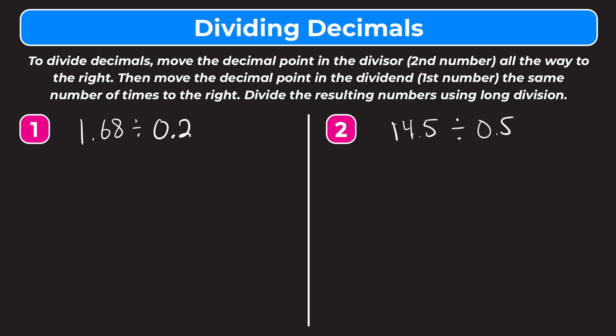So let's try that with number one. We have one and sixty-eight hundredths divided by two-tenths. Let's write it as a long division problem. We have one and sixty-eight hundredths under the bar and two-tenths outside. We have to move the decimal point in our divisor all the way to the right, over one, to make this two. And then in our dividend we also have to move it over one place to make that sixteen and eight-tenths. Let's rewrite this without the arrows, so we have two on the outside and sixteen and eight-tenths.